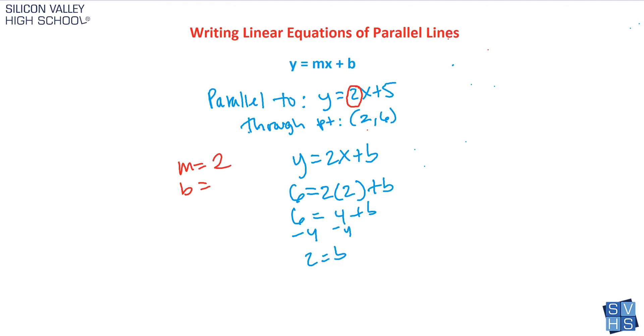Now look, we only have one variable, so 6 equals 4 plus b, minus 4, minus 4, and you get 2 equals b. Now I've done all my work, I know my b value here. If you know m and you know b, you're done with the whole problem. Sure enough, we are, because now we can fill these values in. Now I can just write y equals 2x plus 2. That is my linear equation of a line that is parallel to this guy and goes through the point there.